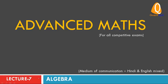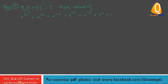Hello friends, this is the 7th lecture of algebra. If x plus 1 by x squared is equal to 3, then find the value of x raised to the power 72, 66, 54, 36, 24, 6 plus 1.